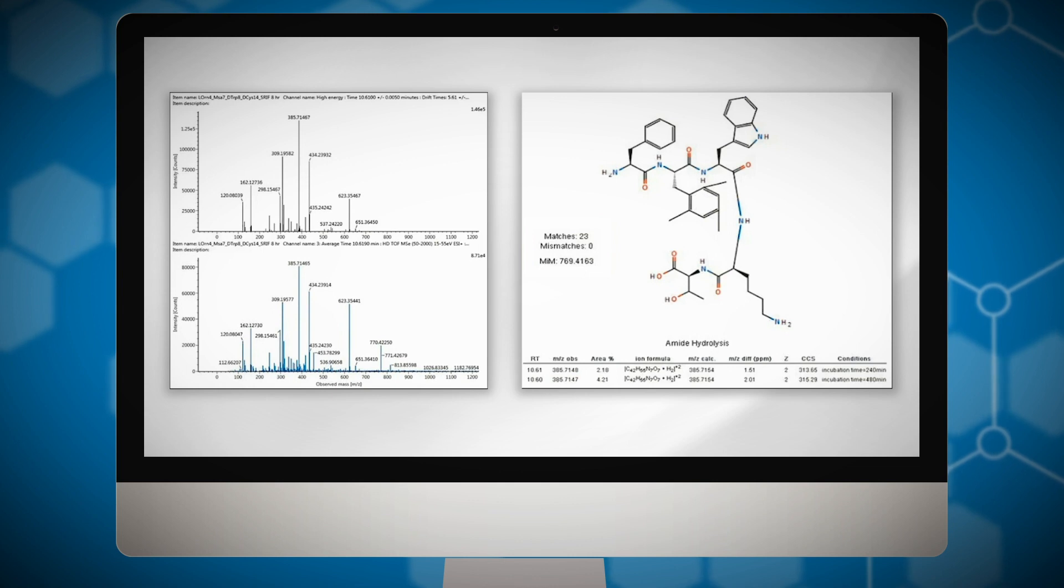This is important because Mass MetaSite uses a scoring algorithm which determines how many product ions can be successfully rationalized from the structure of the proposed metabolite and which cannot. On the right hand side we can see that all 23 observed product ions can be explained and none have no plausible assignment, leading to high confidence this is the correct interpretation of the data. This is a clear benefit for the discovery MetID workflow.